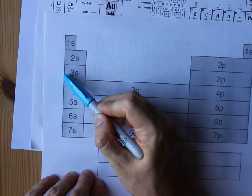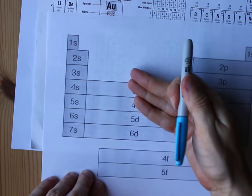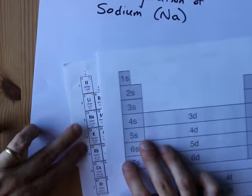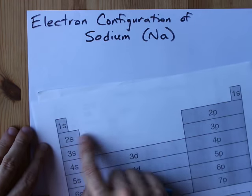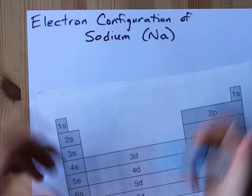So sodium is here at the beginning of the 3s. It is the first element in the 3s block, as I would teach people. And so we're going to follow this periodic table through to create the electron configuration.